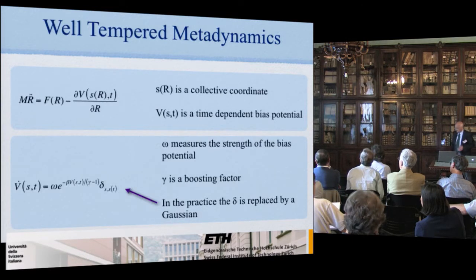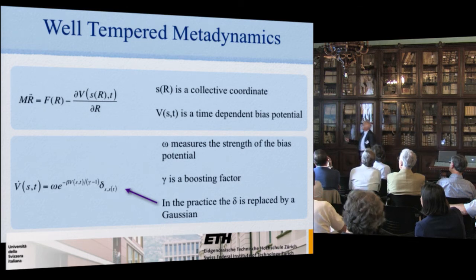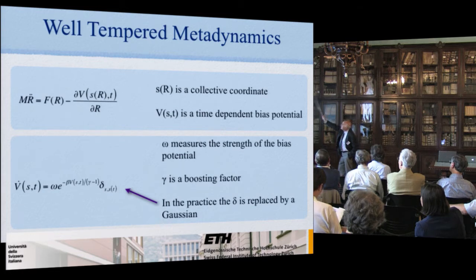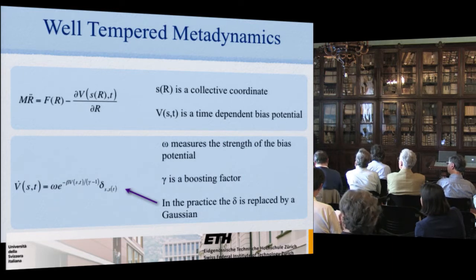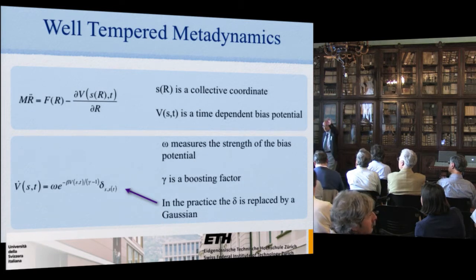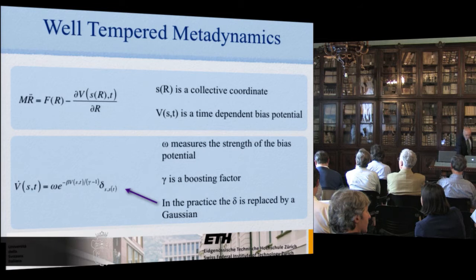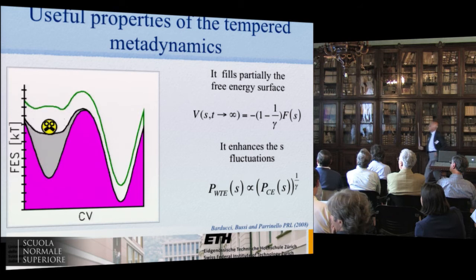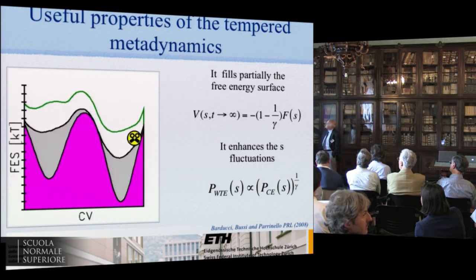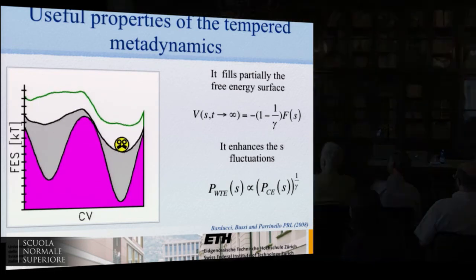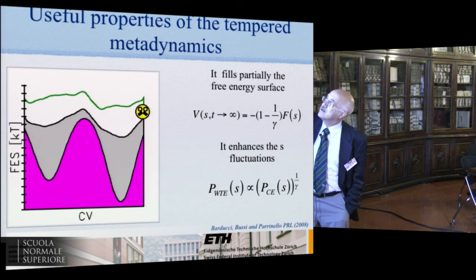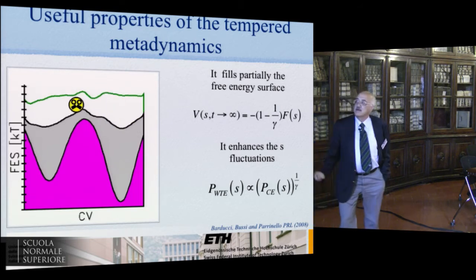We have developed this further in a more sophisticated way, introducing what we call well-tempered metadynamics. In our modified Newton's equation, we have a time-dependent bias which depends on the collective coordinate. The height of the Gaussian depends on its previous history — if you've visited the place, the Gaussian becomes smaller and smaller. There is a parameter gamma, a boosting factor, which we can tune. The bias is related to the free energy by a proportionality factor depending on gamma.